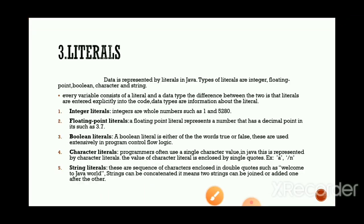Now the third token type: literals. Data is represented by literals in Java. Types of literals are integer, floating point, boolean, character, and string. Data may be a numeric value, floating point value, string, character, or boolean — such data are represented by literals. For example: 'int a = 12' — here 12 is a literal of type int. 'String' with double quotes "Hello World" — hello world is a literal of type string.